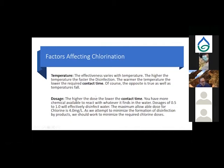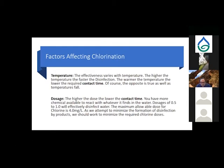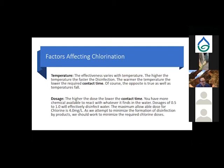Dosage is another key factor. The higher the dose, the more chemical is available to contact pathogens. Dosages of 0.5 to 1.0 mg/L will effectively disinfect water. The maximum allowable chlorine dose is 4.0 mg/L. To minimize disinfection byproducts, we should work to maintain the lowest possible residual, and the regulatory minimum throughout the distribution system is 0.2 mg/L — maintained to the very last tap on the very last line.